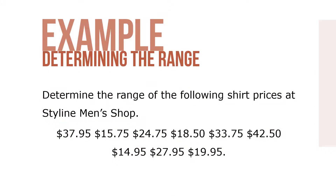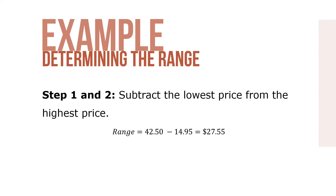Here's an example. Determine the range of the following shirt prices at StyleLine Men's Shop. Step 1 and 2: subtract the lowest price from the highest price, where range equals $42.50 minus $14.95, for a total of $27.55.